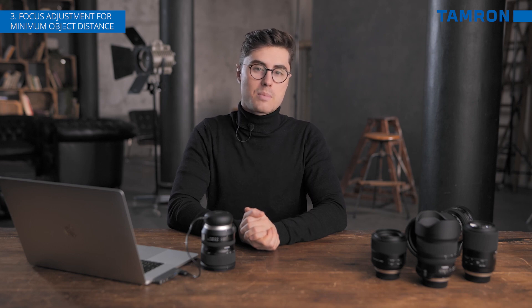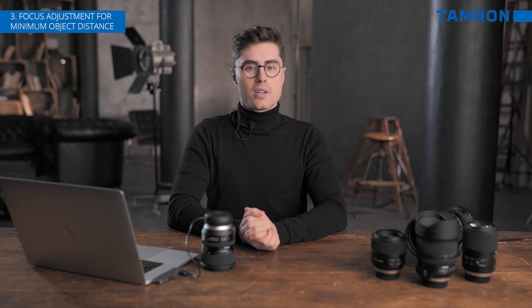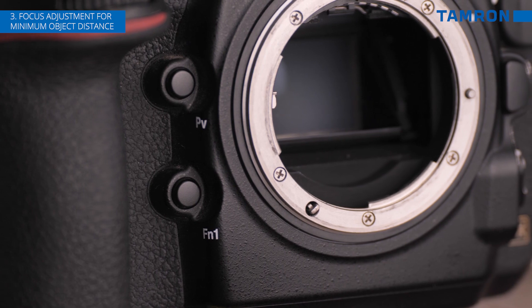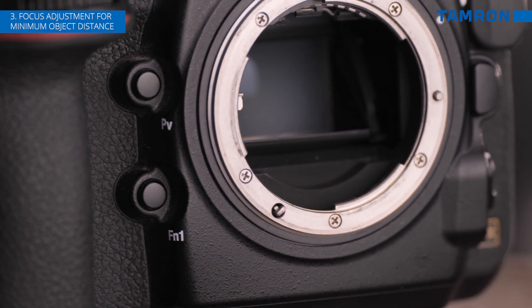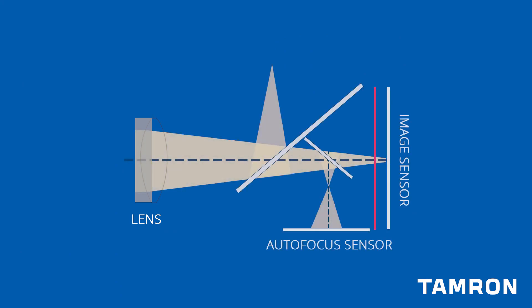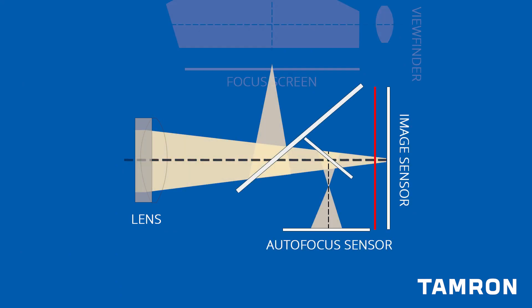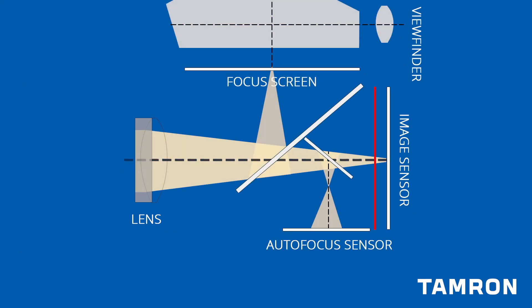So why does this happen? Front or back focus is a DSLR problem. For the most part, it's a result of the way the camera's phase detection system works with the lens, the sensor plane, and the focusing screen plane all together. It's a very complex system where every aspect must work together perfectly. These focus variances are increasingly prominent on modern high resolution cameras.